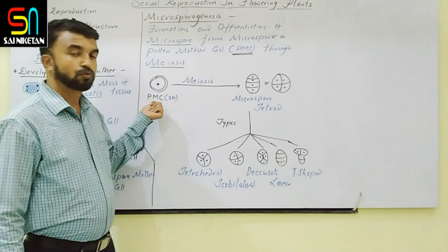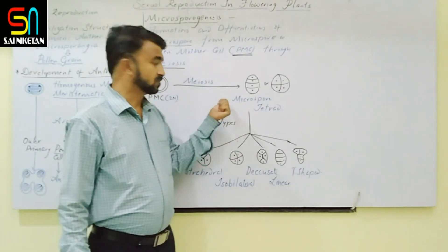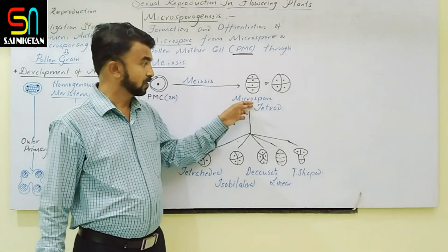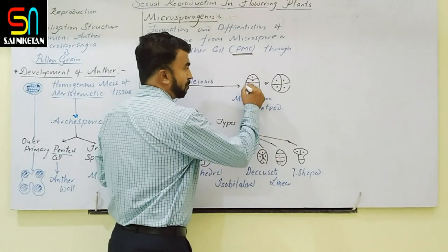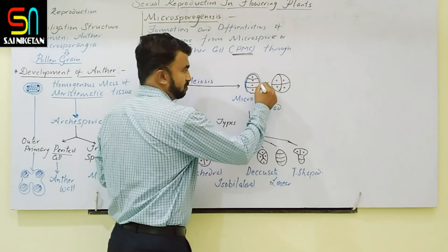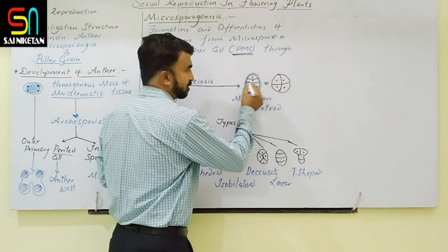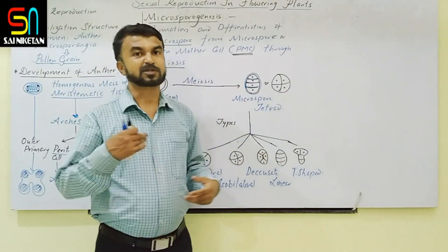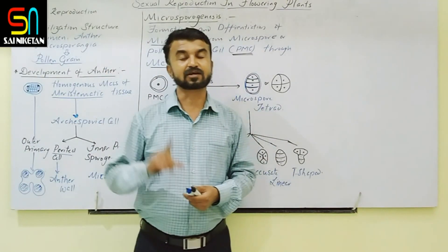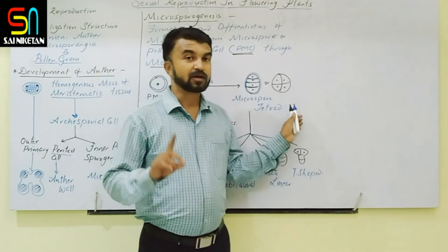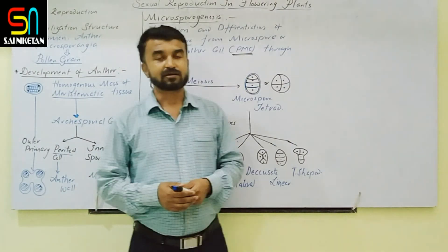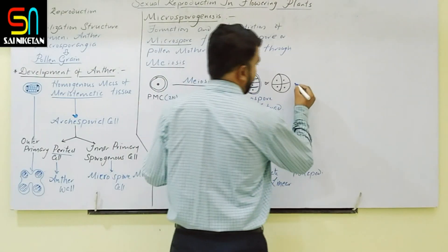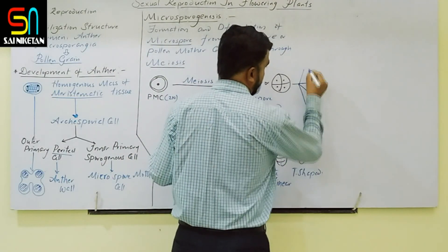In microsporogenesis, the pollen mother cell undergoes meiosis and produces microspores, ultimately forming a microspore tetrad. All four microspores are held together by a common wall with callose material in between. To separate all four microspores, a specific enzyme is necessary. That enzyme — callase — is secreted by the tapetum layer. The callase enzyme acts on the callose wall and helps in the separation of all four microspores.